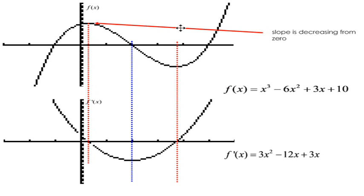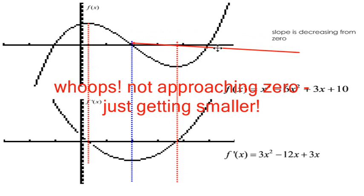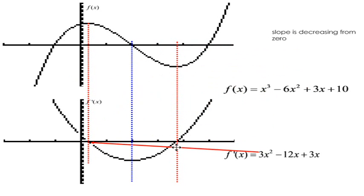So this part of the graph here, the slope is approaching zero, it's getting smaller, and getting closer to zero. So here, our slope, our values are getting smaller.